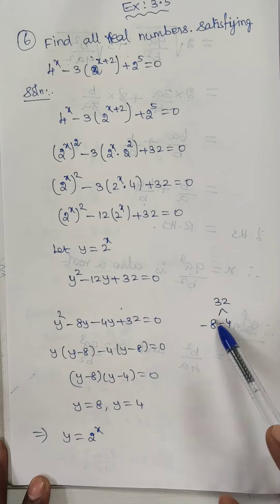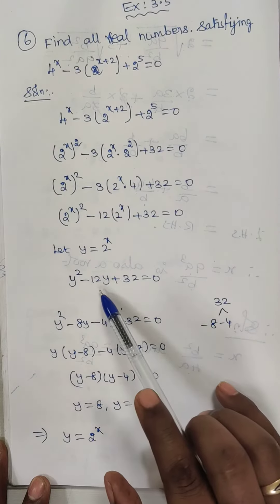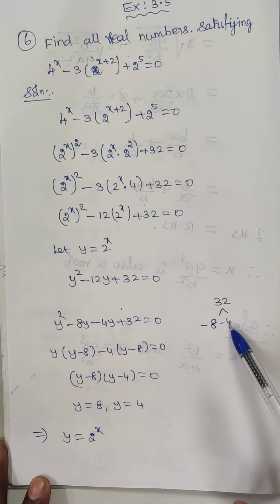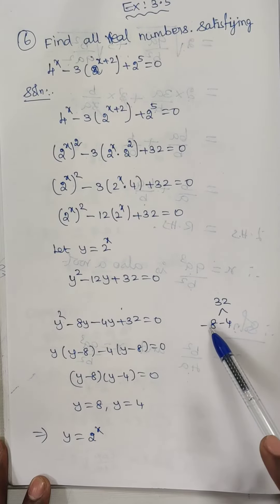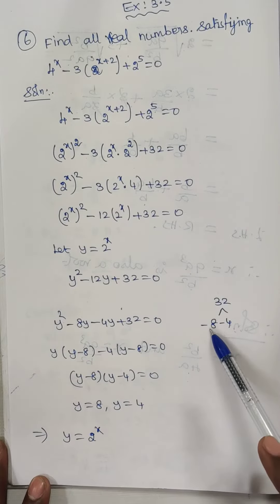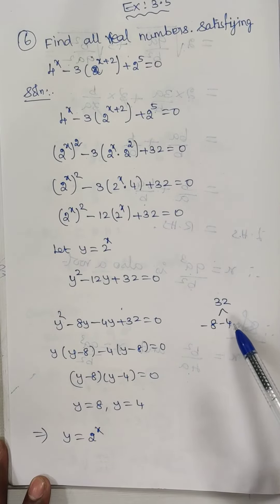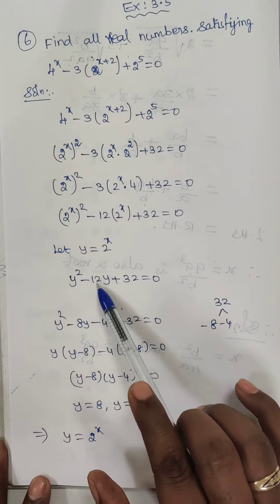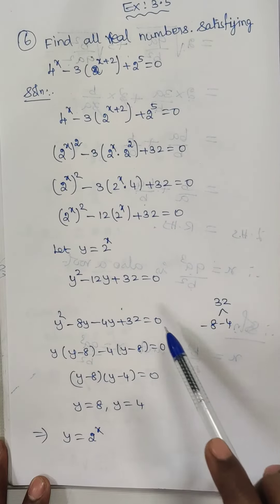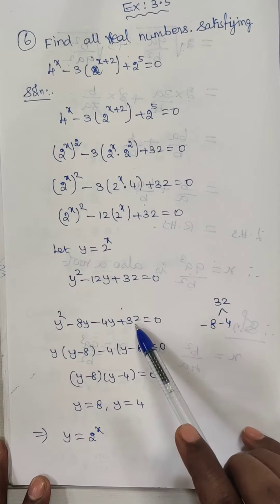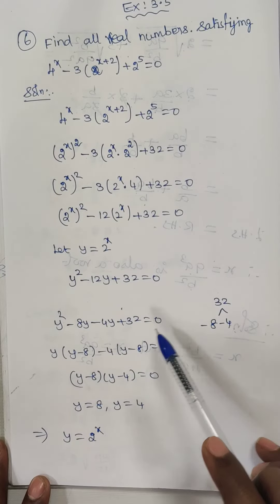We can split 12 as 8 and 4: 8 fours are 32, and if you add we get 12. So we put minus 8 and minus 4. If you add minus 8 and minus 4 we get minus 12, and if you multiply minus 8 into minus 4 we get 32. So y square minus 12y can be split as minus 8y minus 4y, giving y square minus 8y minus 4y plus 32, which is equal to 0.